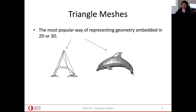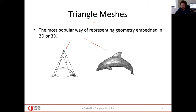A popular way of explicitly representing a model is the triangle mesh — the idea of sticking together a set of triangles, or any polygons, but triangles are the most popular choice. Sometimes we also go with quads as the polygons in our meshes.